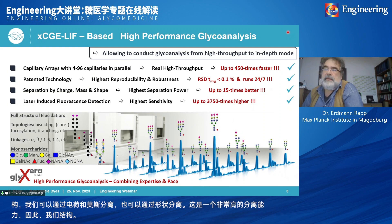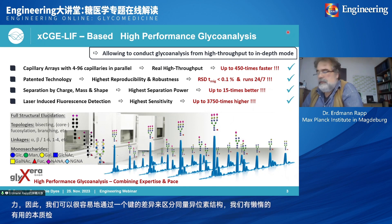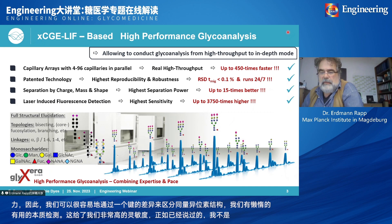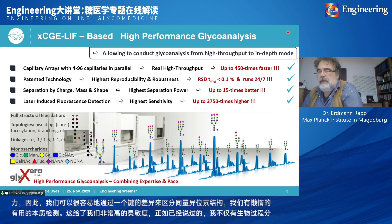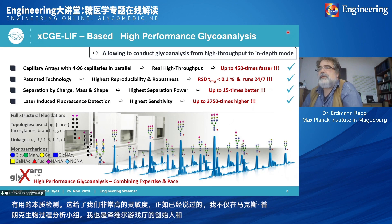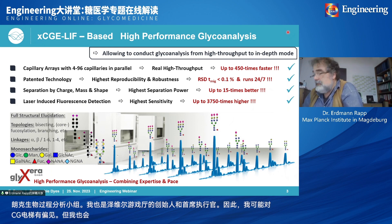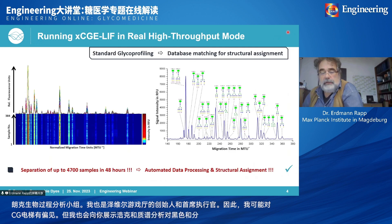We can easily distinguish isobaric structures just by the difference of one linkage. We have laser-induced fluorescence detection, which gives very high sensitivity. I should note I'm not only heading the group for bioprocess analytics at the Max Planck Institute — I'm also founder and CEO of the Glyxera GmbH. Therefore I might be biased about CGE-LIF, but I will show you that HILIC and mass spectrometry are also very important for glycan analysis.